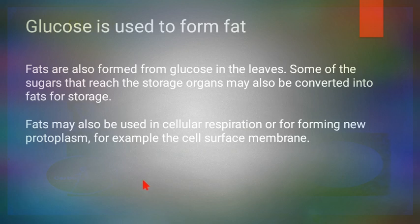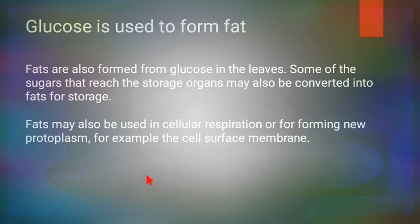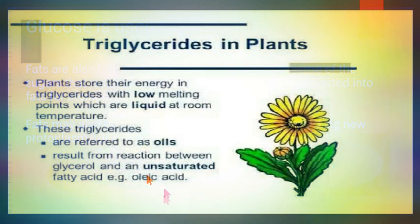Glucose formed in the leaves, when it reaches storage organs, can be stored in the form of fats and lipids, which are then used by plants to make new cell membranes. Fats can also be used in cellular respiration as a substrate. Plants store their energy in triglycerides with low melting points, which are liquid at room temperature and are referred to as oils.